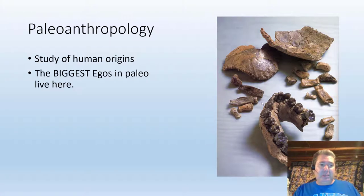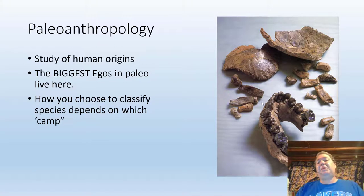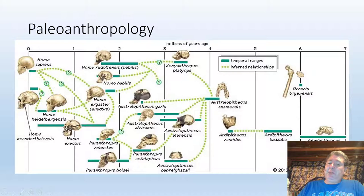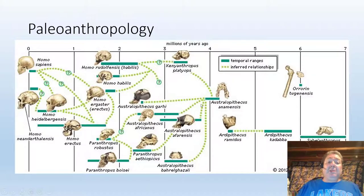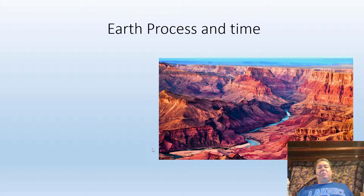Paleoanthropology is the study of human origins — the study of us as a species. It hosts some of the biggest egos in paleontology, with contentious debates over who finds the oldest or best human relatives. How you classify fossil human species depends on which camp or advisor you align with. We have fossils we can say pretty definitively show upright walking going back about 6.5 to 7 million years. The fossil record is somewhat incomplete, and human evolution is more of a bush than a ladder — many branches dying off at different points rather than a straight line.